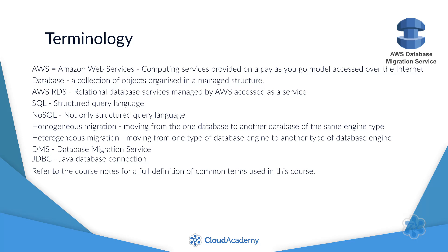Homogenous migrations refer to when we're moving one database to another database of the same database engine type. Heterogeneous migrations is where we're moving from one type of database engine to another type — for example, migrating from an Oracle database engine to a MySQL database engine. Do refer to the course notes if you want more or a full definition of the common terms used throughout this course.